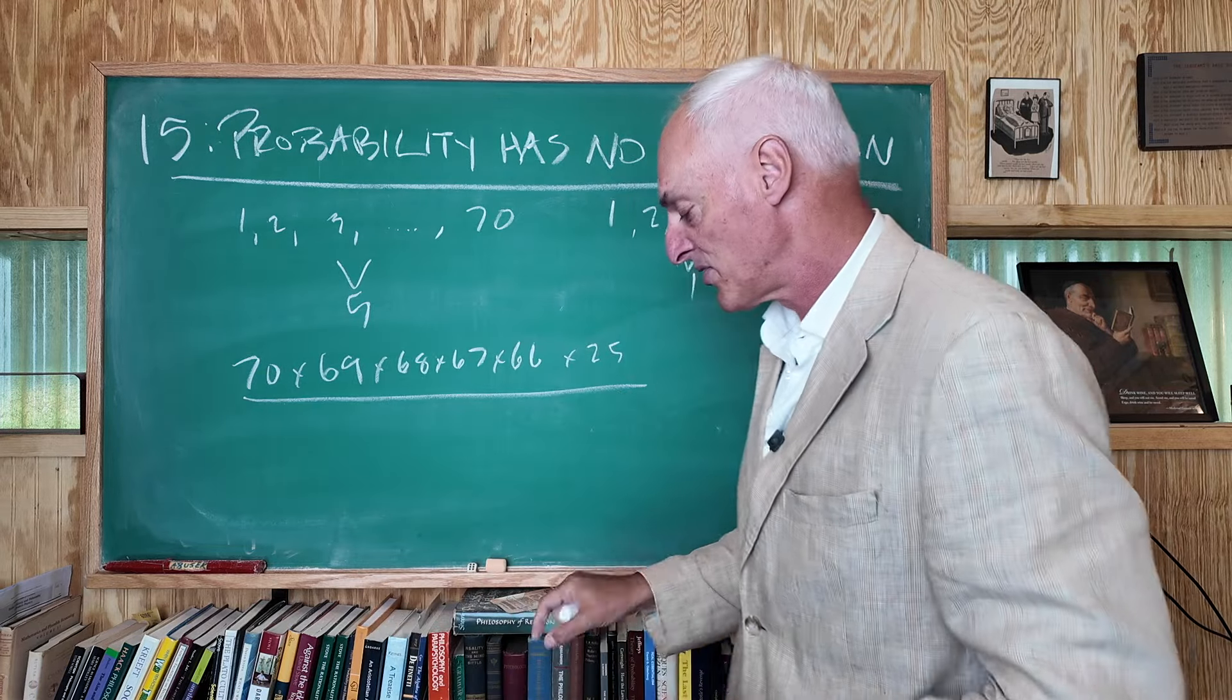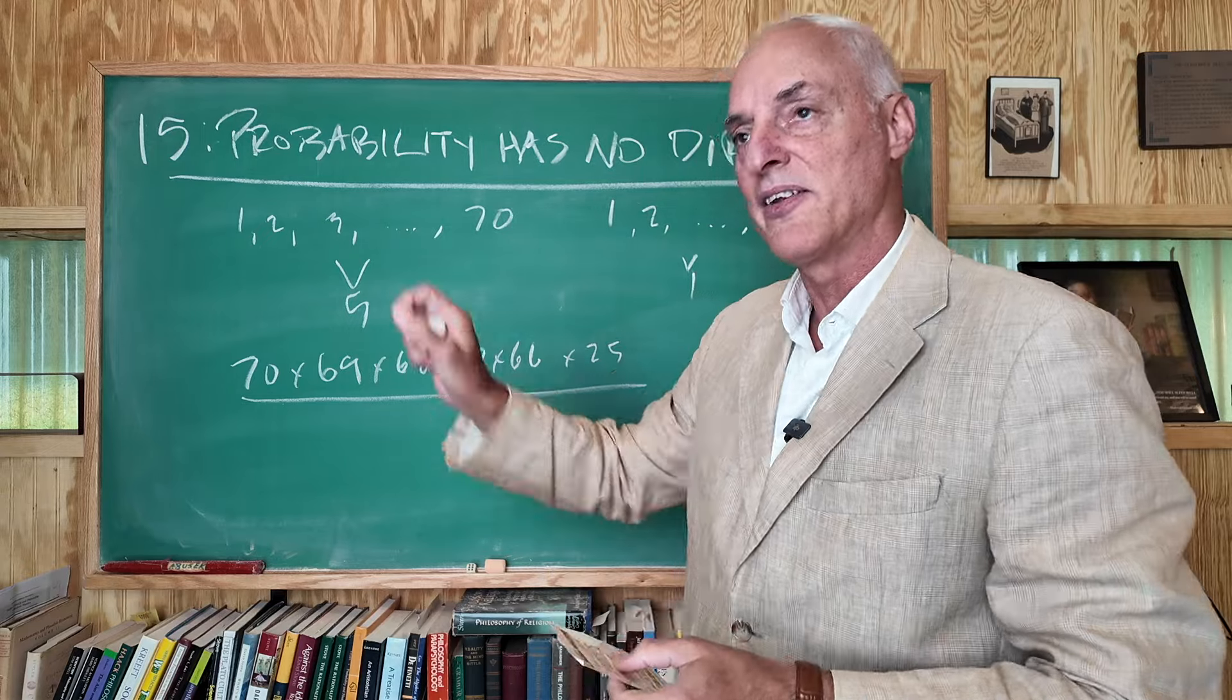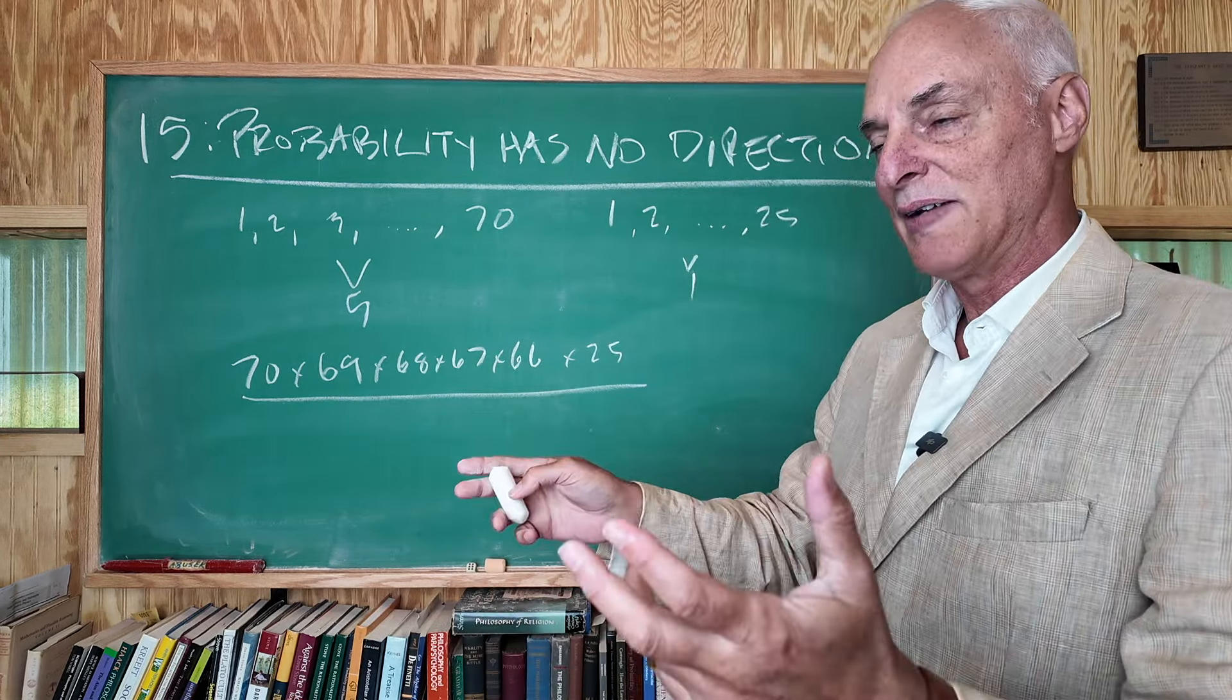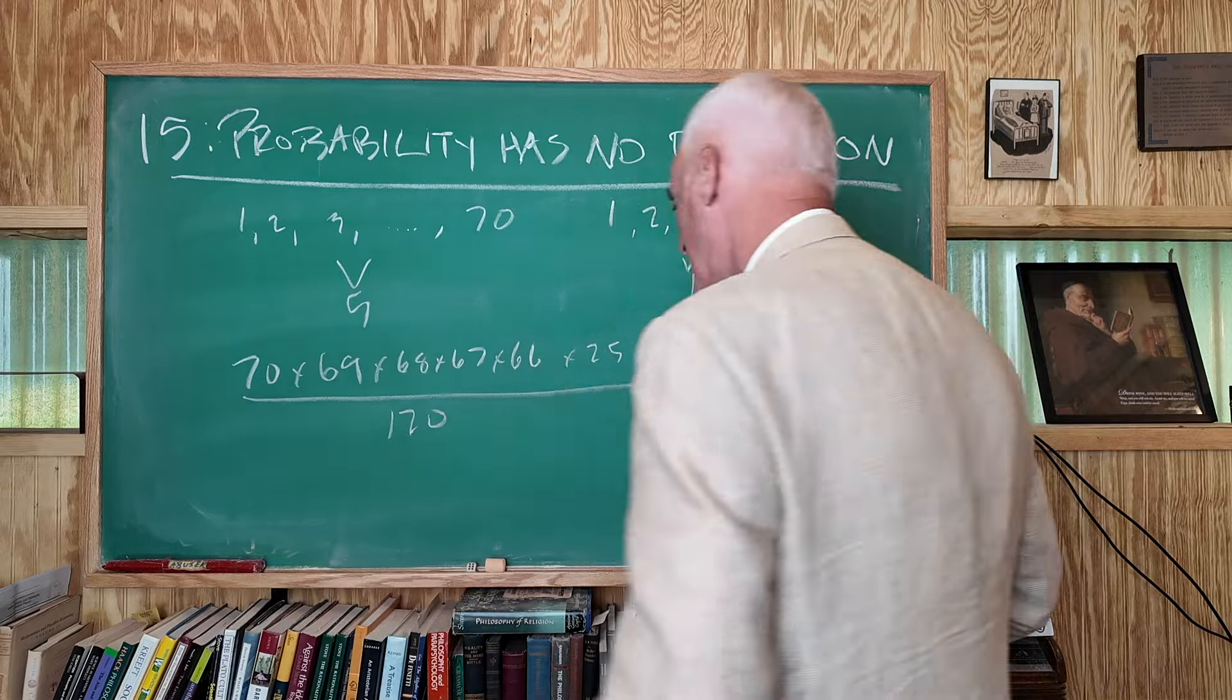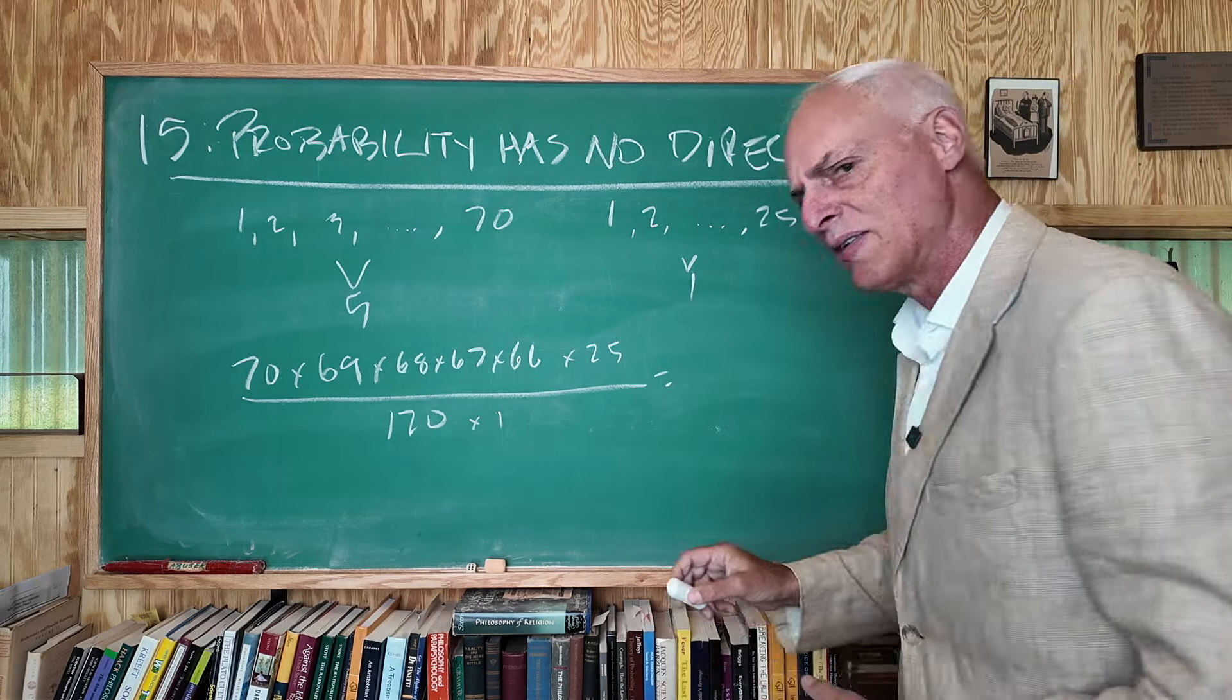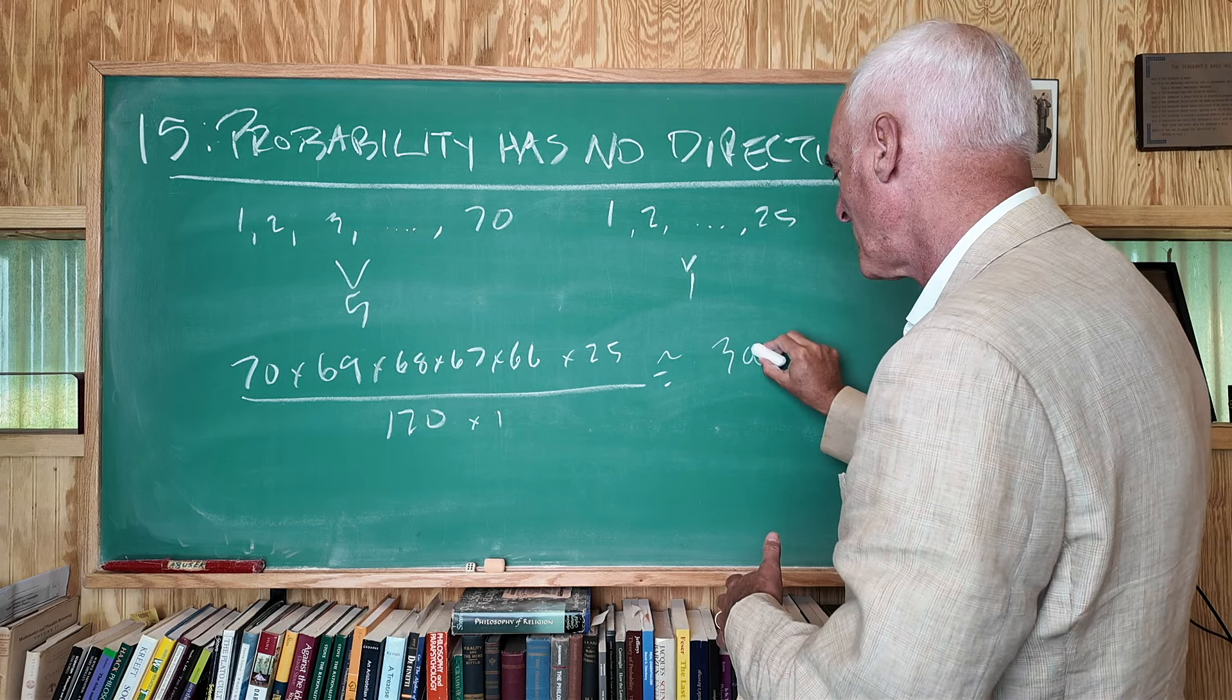However, the order doesn't matter. If I picked 17 and 13 plus all the others on my sheet, it would still be a winner. So the order doesn't matter. And how many different ways are there arranging five numbers? Well, we learned that last time. It would be 5 factorial, and that happens to be 120. And how many different ways are there choosing one number? Well, there's only one, so times one. And this equals, oh, I forgot to do the calculation. Is it 300 million or 3 billion?